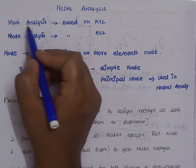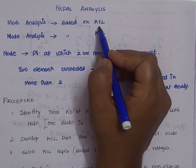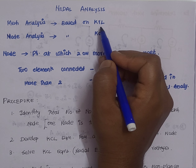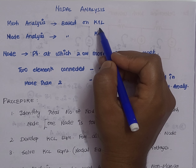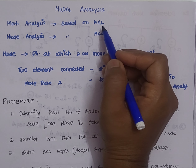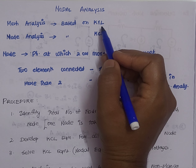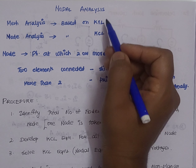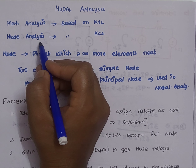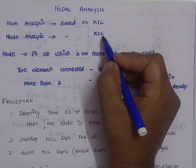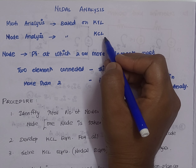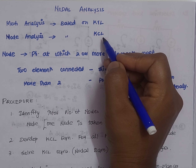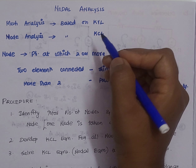When we consider mesh analysis, it is based on KVL, which is Kirchhoff's Voltage Law. We have seen how problems are solved using KVL, whereas in nodal analysis it is based on Kirchhoff's Current Law, KCL. This is the ultimate difference between these two analysis methods.